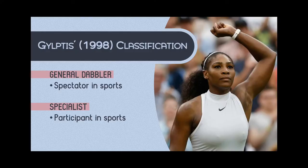The first classification will be according to Glyptis in 1998. According to them, there are two types of sports tourists. The first type is the general dabbler, who is basically the spectator during a sport. And we have the specialist, who is the participant in sports. So if you are in a sports attraction and you are engaged in the actual sport, you are a specialist. If you are just watching, you are a general dabbler according to Glyptis.